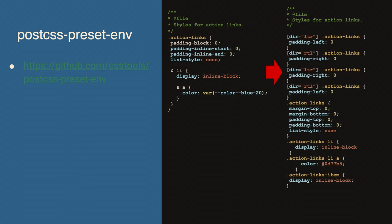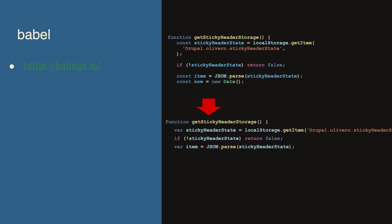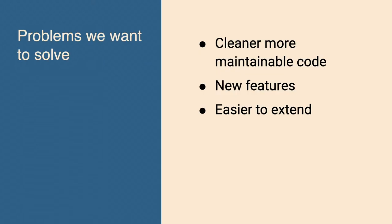Transitioning from Less to PostCSS Preset ENV is possible but depends on your codebase. Right now in Drupal Core, we use modern JavaScript — ES6-style. Babel will transpile things like const into var, which is IE11-style code. We're not going to have to do that anymore — there's actually an issue to take that out. What these new CSS features enable us to do is make more maintainable code, newer features, and easier-to-extend code.